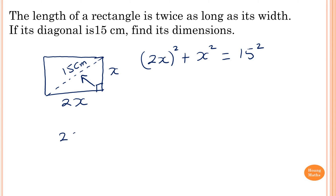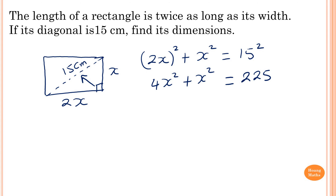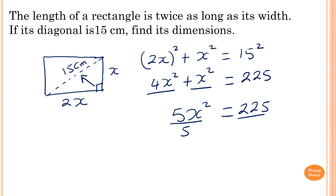Remember, (2x) squared is the same as 2x times 2x, so 2 times 2 is 4 and x times x is x squared, giving 4x squared. So 4x squared plus x squared equals 225. Collecting like terms gives 5x squared equals 225. Dividing both sides by 5 gives x squared equals 45. Taking the square root of both sides gives x equals the square root of 45.